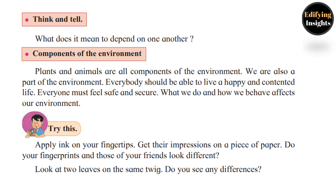Components of the Environment: Plants and animals are all components of the environment. We are also a part of the environment. Everybody should be able to live a happy and contented life, and everyone must feel safe and secure. What we do and how we behave affects our environment.